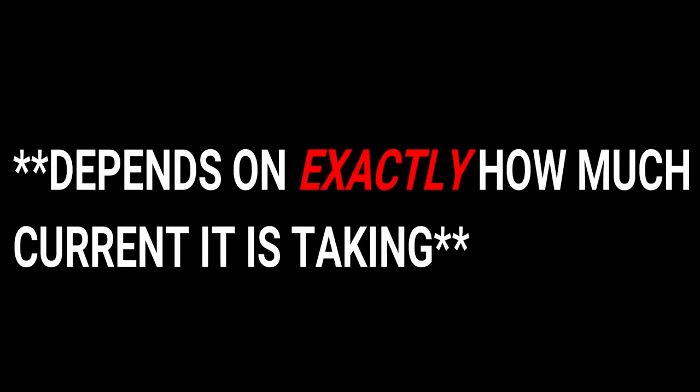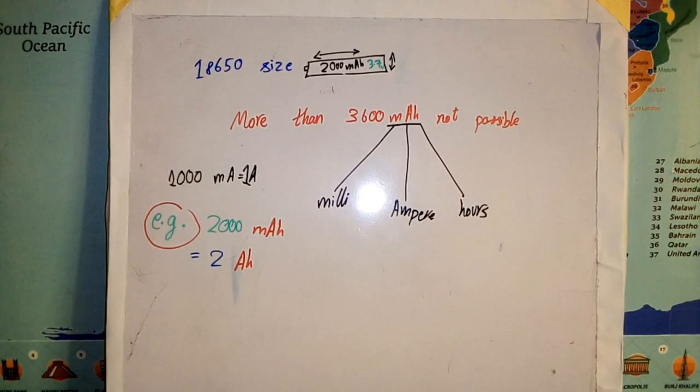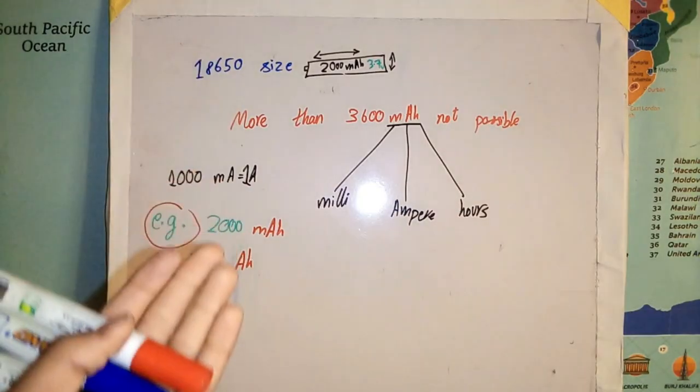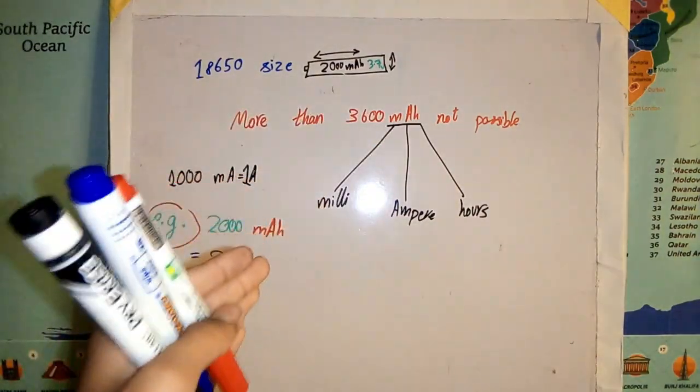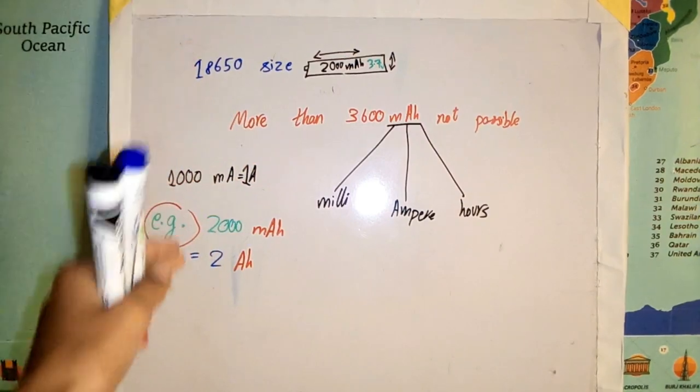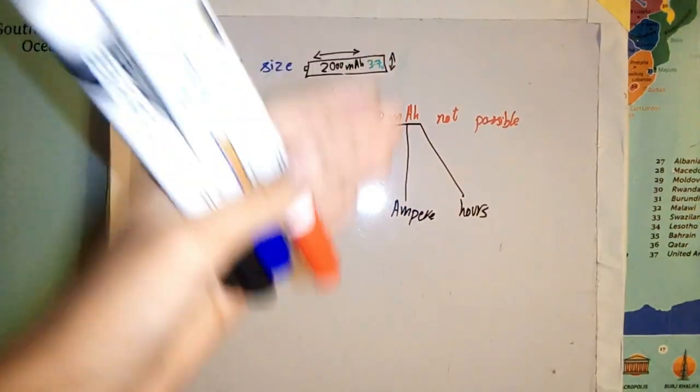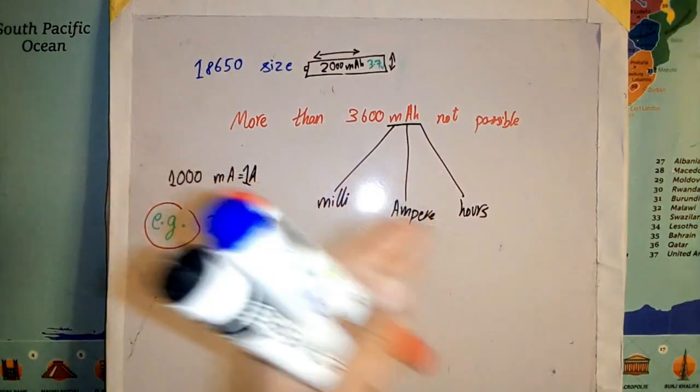On the other hand, if it is taking a lot of current, then first you have to be sure that it is within the current drain range of the battery, and then you have to be sure that the capacity of the battery can handle it for the desired amount of time before it runs flat.